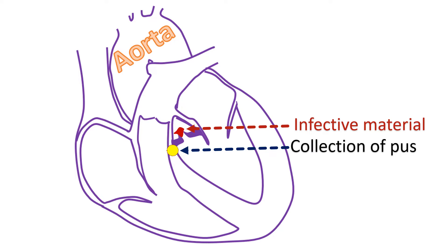Acute endocarditis has a higher risk of spreading to the regions of the heart near the walls, producing a collection of pus around the wall — a wall ring abscess. When aortic valve endocarditis spreads, it can damage the conduction system of the heart which is very near it. This can produce complete heart block, an electrical block different from the blood vessel block which produces a heart attack.